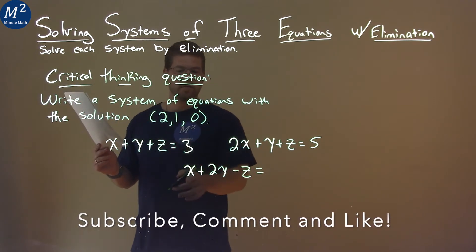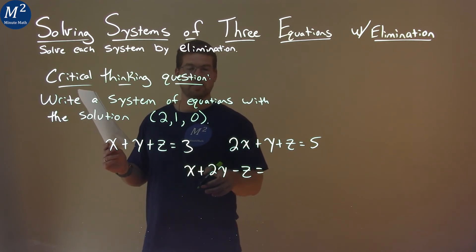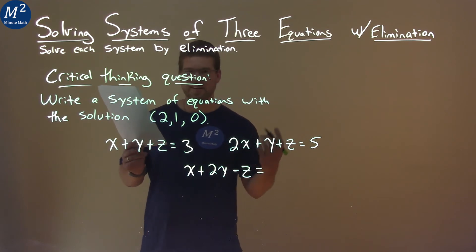Well, 2 plus 1, or sorry, 2 for x, 1 for y, that's also a 2. So we have 2 plus 2, which is 4, minus 0. What does that equal? It equals a 4.